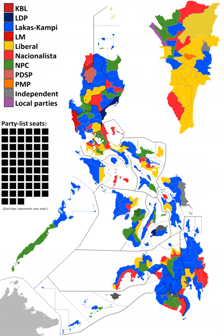In the Davao Region, Compostela Valley 1st: Dacer-Corvera case witness and former police superintendent Cesar Mancao is running for the open congressional seat under Aksyon Demokratiko, in coalition with the Liberal Party. Mancao lost the election to Maricar Apsay, daughter of the incumbent Manuel Zamora, with 38% of the vote as compared to Apsay's 56%.